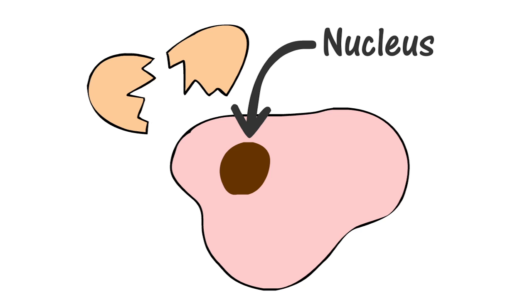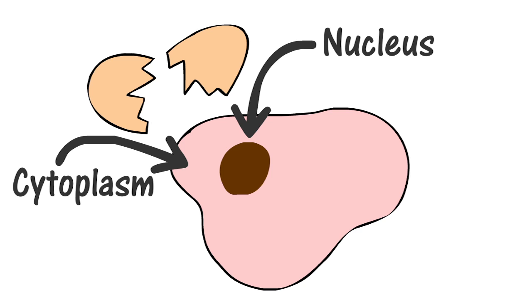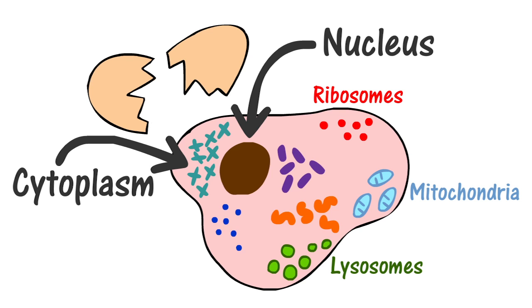The surrounding egg white is called the cytoplasm, which houses specialized structures such as ribosomes, mitochondria, lysosomes, and many more. All of these parts work together to keep the cell alive and happy under the direction of your DNA.